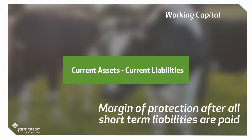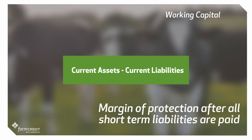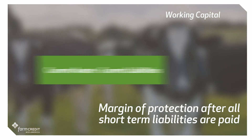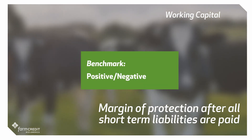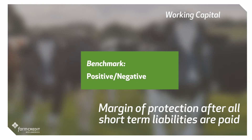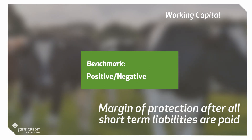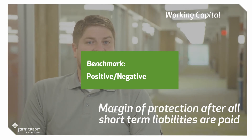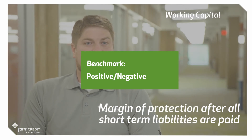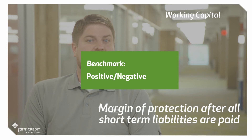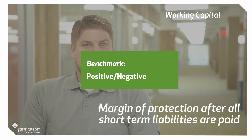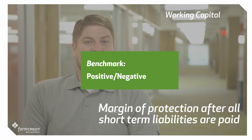Working capital is the difference between current assets and current liabilities. This difference highlights the short-term risk bearing ability of the operation. If this number is negative, then the operation could potentially have cash flow issues within the next 12 months and will need to rely heavily on borrowed funds for liquidity. An important note in today's environment is to be realistic in the value that we give our inventories to calculate working capital. Grain in storage and livestock do not have the same market value as they did a year ago.